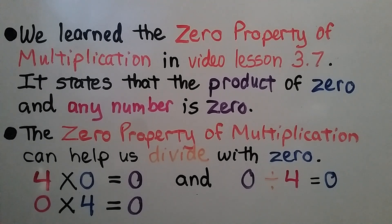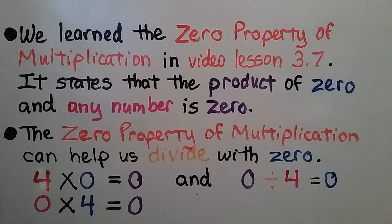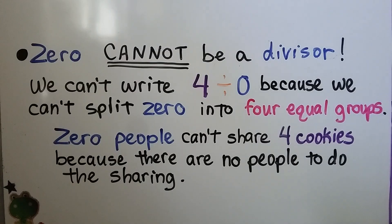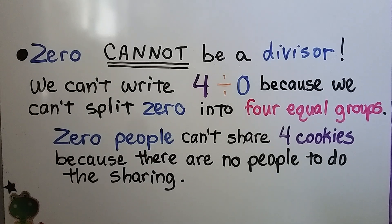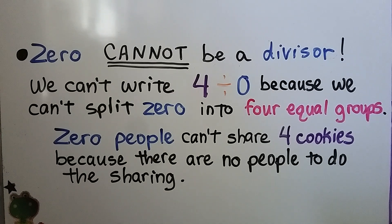Do you notice that we don't have 4 divided by zero here? Zero cannot be a divisor. We can't write 4 divided by zero because we can't split zero into 4 equal groups. Zero people can't share 4 cookies because there's no people to do the sharing — there's zero people.